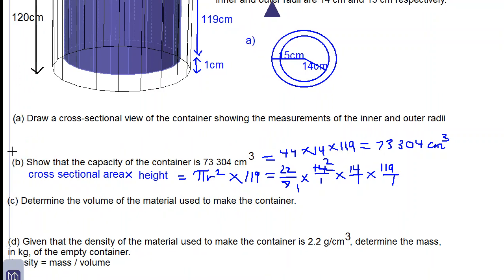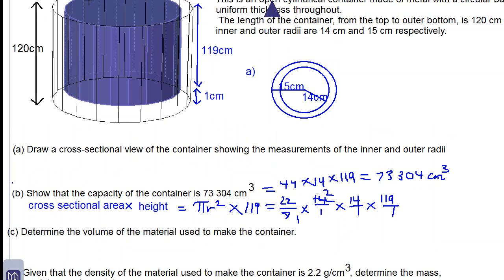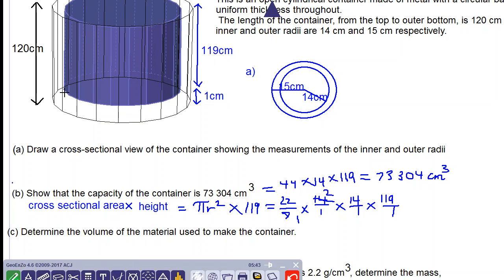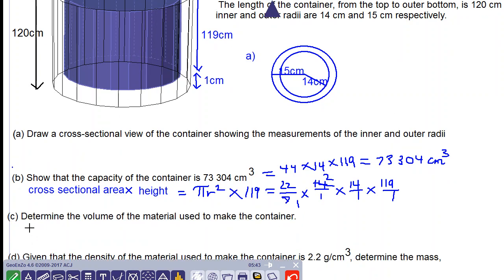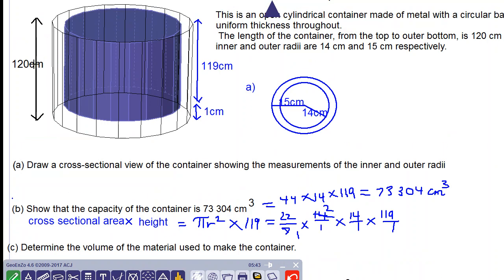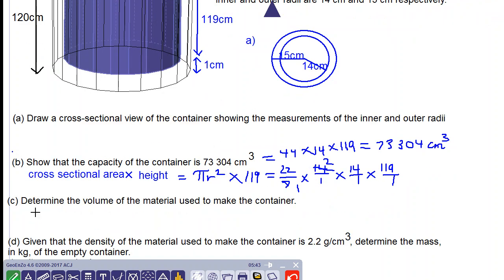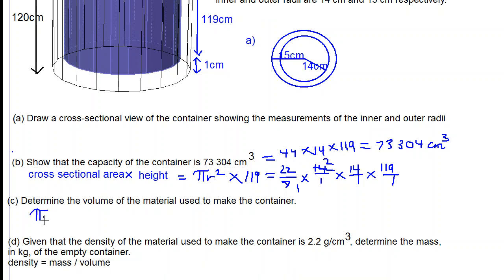Let's move on to part C. Determine the volume of the material used to make the container. Let's find the volume of the entire solid, assuming there is no space in between. Assuming we have a solid cylindrical container of height 120 cm and outer radius of 15 centimeters. We find the cross-sectional area, π r², and multiply it by the height, which is now 120 centimeters.